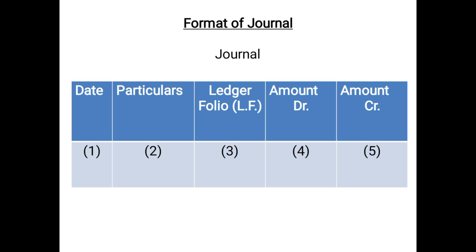Now the format of journal — very important. There are five columns in the journal format. You must write the word 'Journal' as a heading above the format, otherwise your marks will be deducted whether in class 11 or 12. The first column is the date column — on what date the transaction occurred; for example, if goods were sold on 5th December 2020, you write that date. The second column is the particulars column, where journal entries are recorded in entry form.